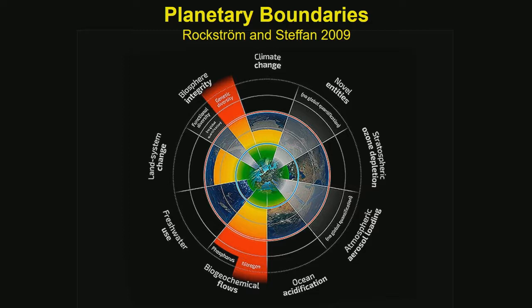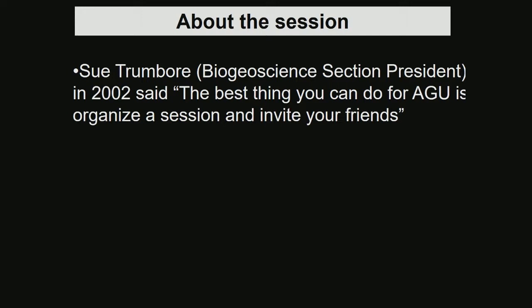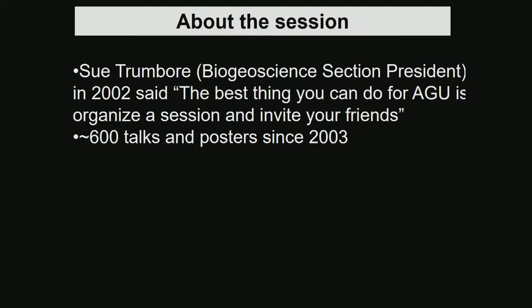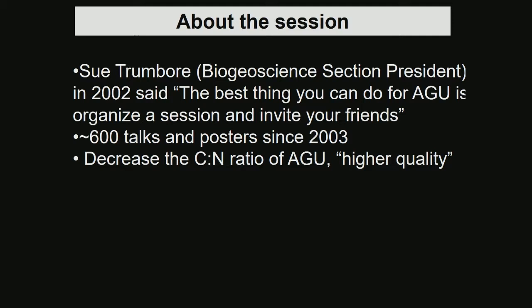A little bit about the session. Sue Trumbor, who's the biogeoscience section president, said the best thing you can do for AGU is to organize a session and invite your friends. AGU makes it really easy — you put in your session proposal and it's a vote of the people. We've been really successful, with close to 600 talks and posters since 2003 in this session.